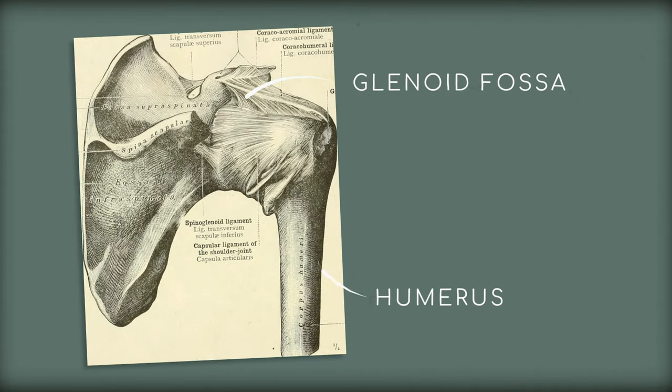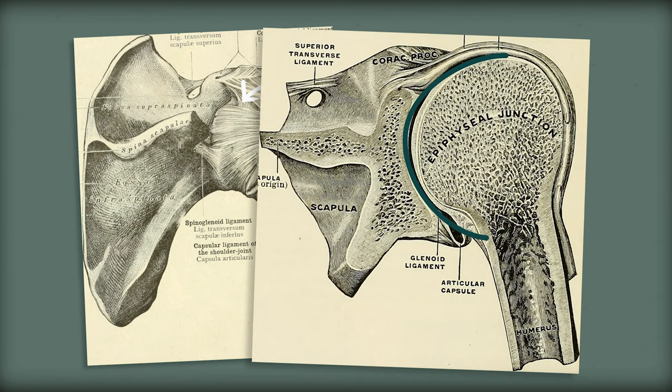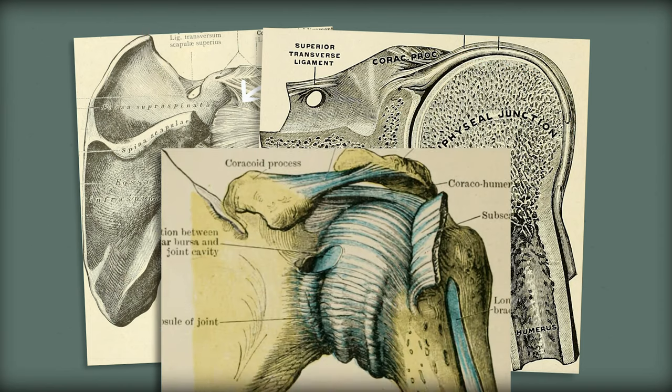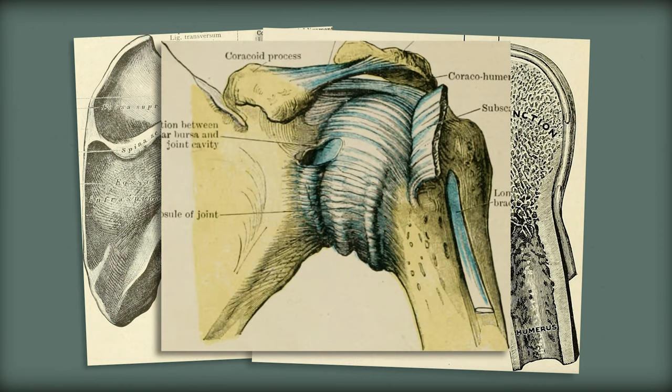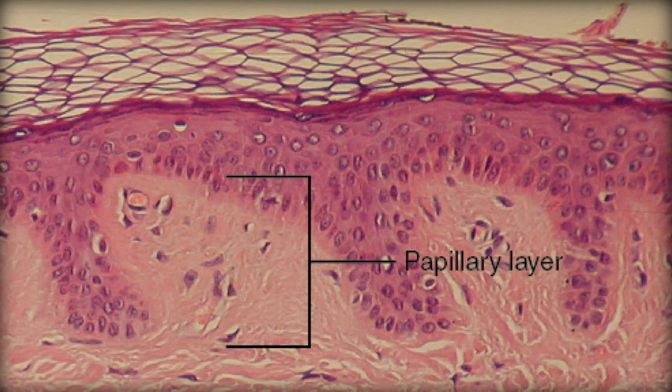Irregular dense connective tissue might not have the same single-direction tensile strength, but it's good at resisting multi-directional force — that's what makes it perfect for the capsule around your shoulder. The glenohumeral joint needs a large range of motion, so having a bunch of spindly dense ligaments around it wouldn't be a great idea. But you still need to keep the humeral head in the shallow glenoid fossa, so you need dense tissue — irregular for the multi-directionality and dense for the strength. This type of connective tissue also makes up 80% of the connective tissue in our dermis, the middle layer of skin.